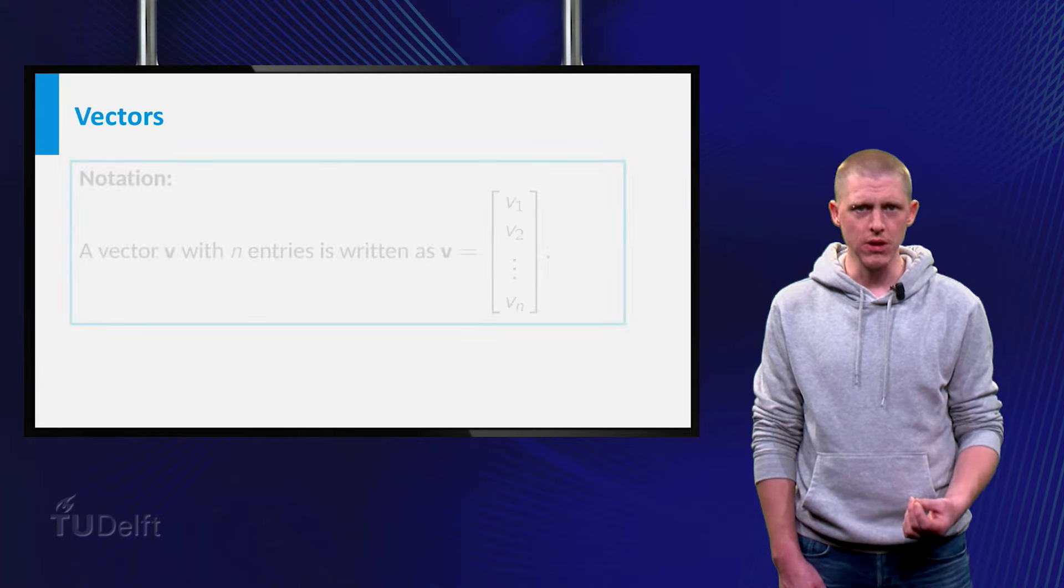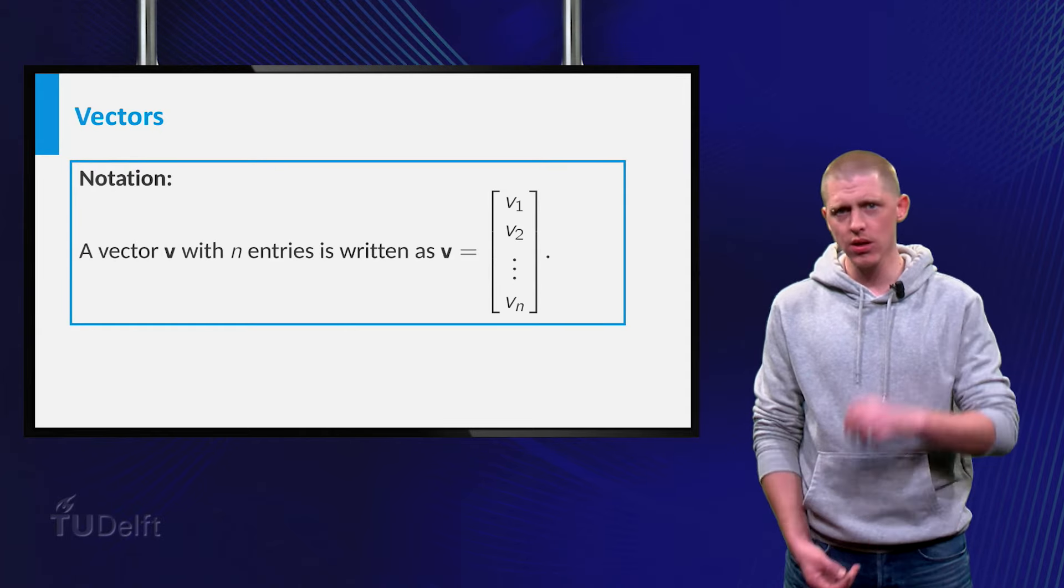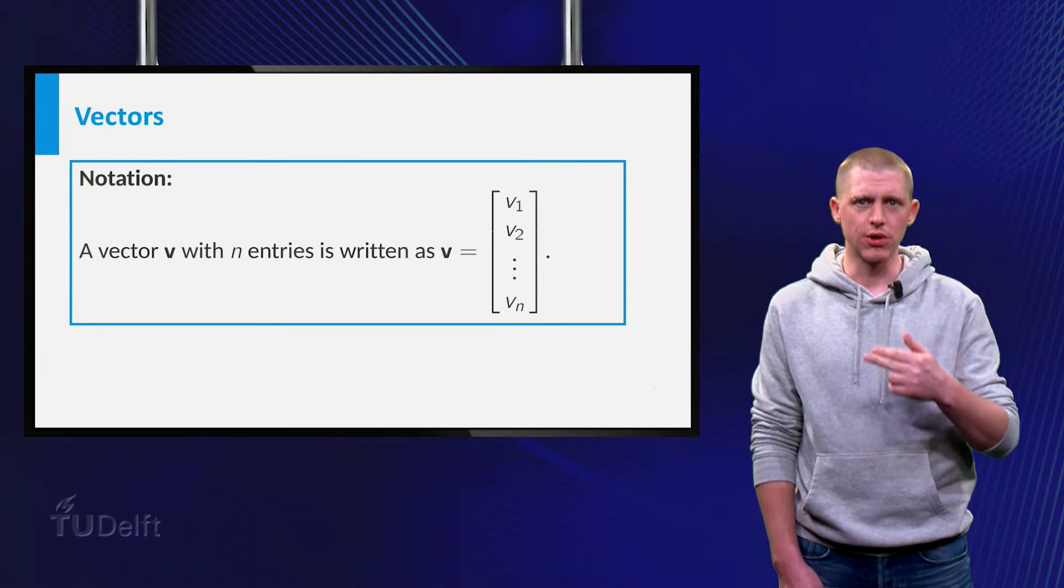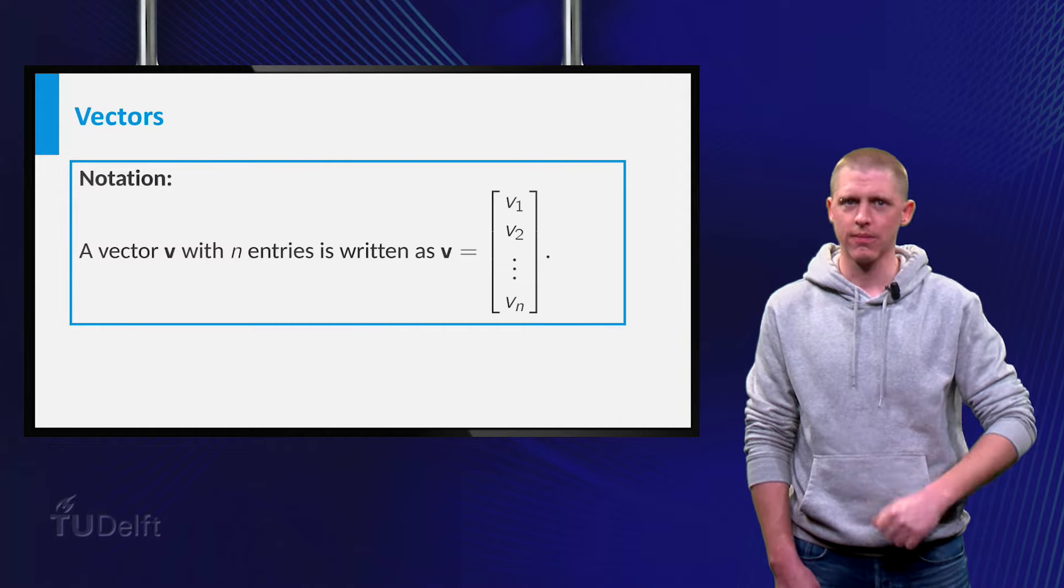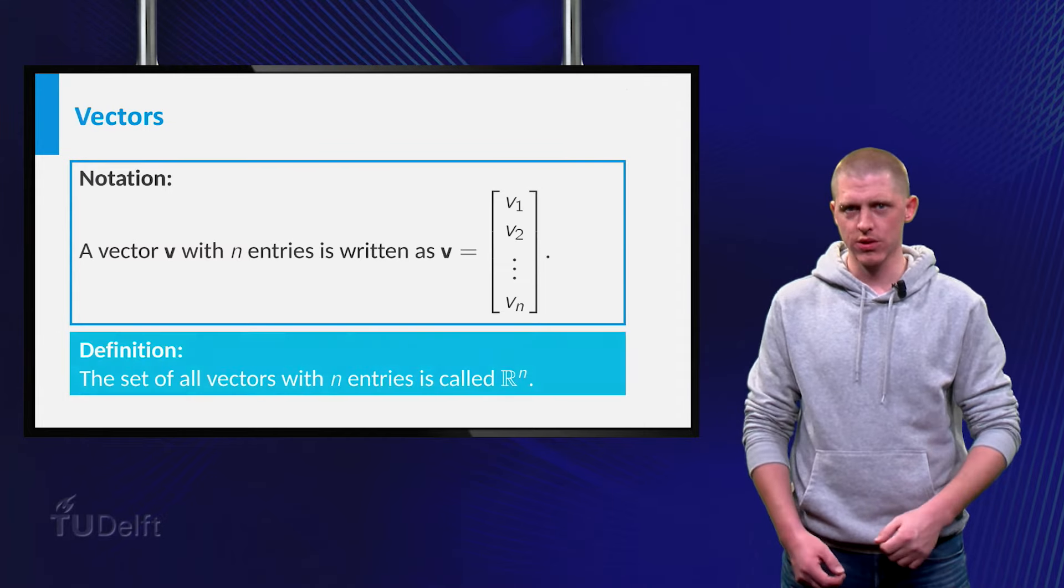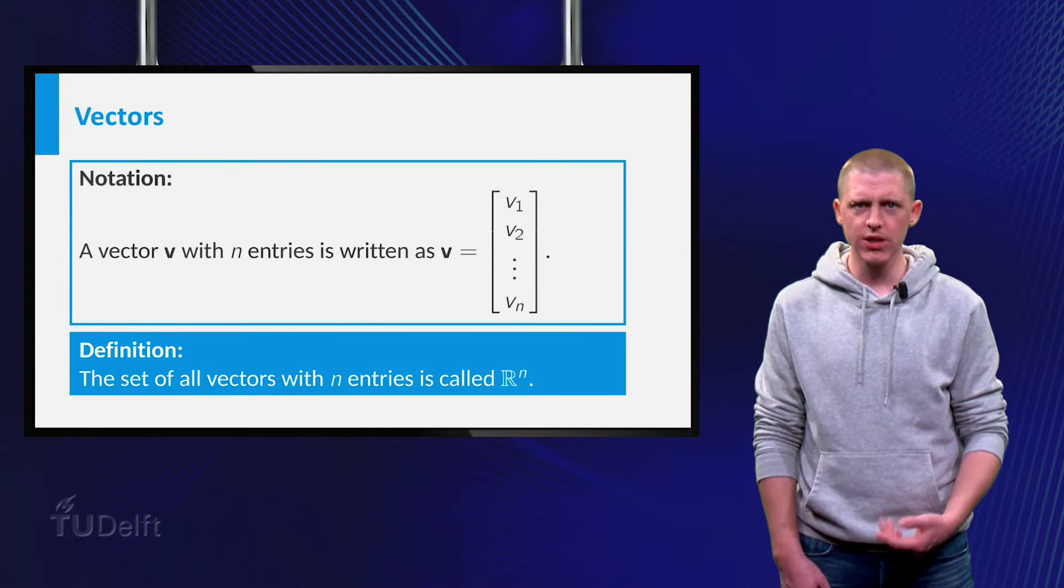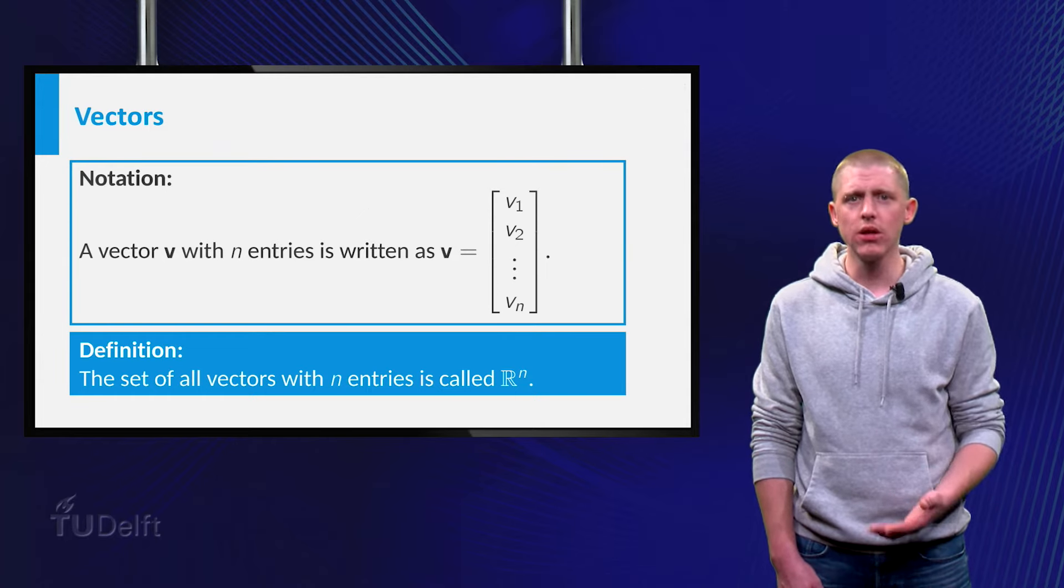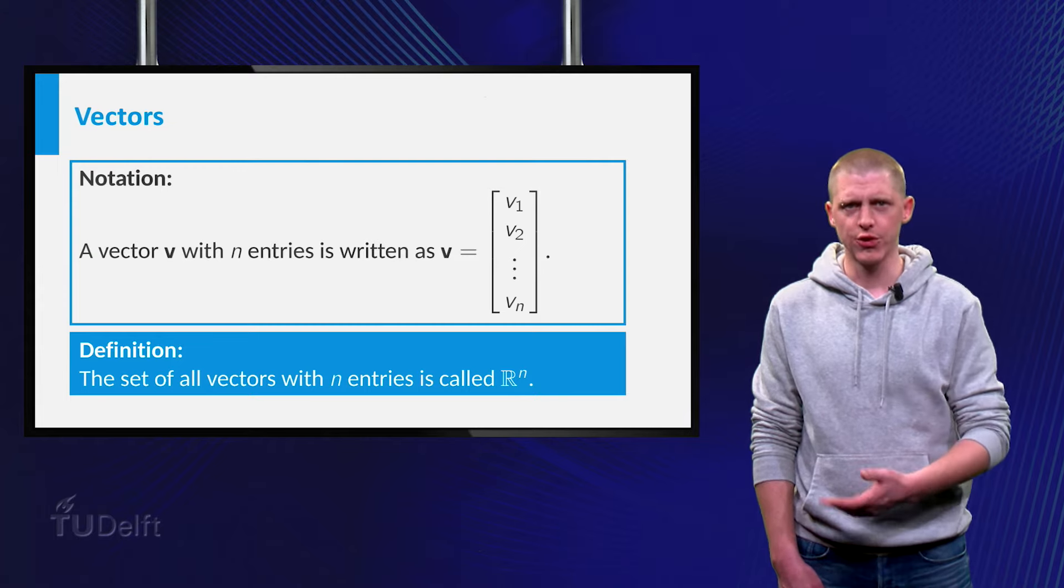If a vector v has n entries, you can write this as a column with the numbers v1, v2 and so on until you reach the last number vn. If you take all vectors with n entries, we get a set called Rn. So if you say a vector v is in Rn, you know that v has n entries.